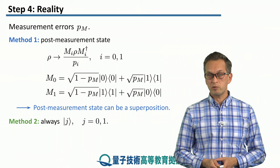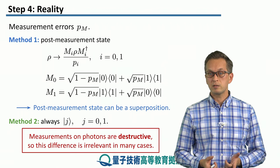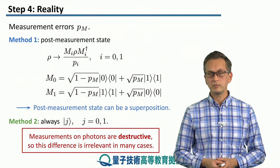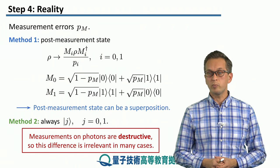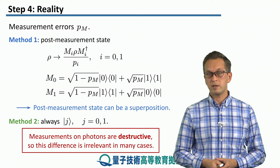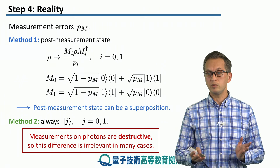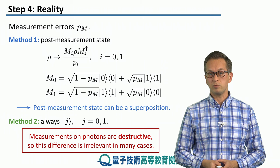But in the case of destructive measurements, which is the case we consider in networking quite often, since there are no post-measurement states, they are destroyed, both of these methods are the same because they give you the same probabilities of measurement outcomes. So it's up to you which method you choose to use.